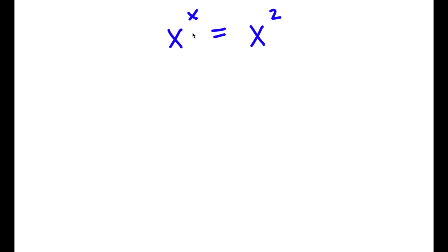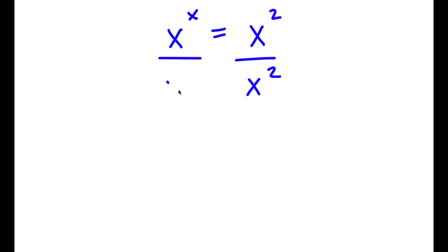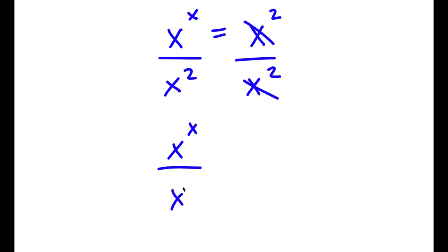Alright, so I have x to the power of x is equal to x to the power of 2. The first thing I'm going to do is divide both sides by x to the power of 2. So these cancel out, and I'll be left with x to the power of x over x to the power of 2 is equal to 1.